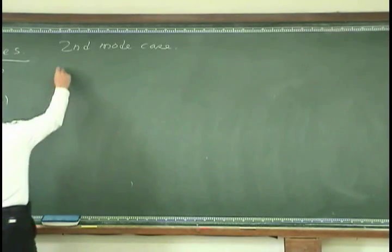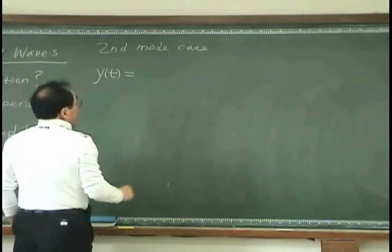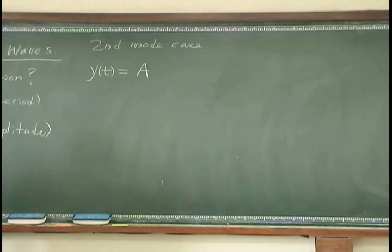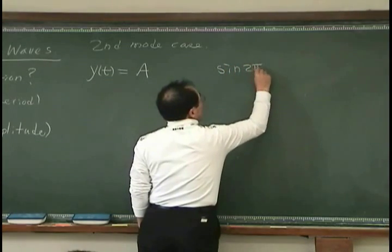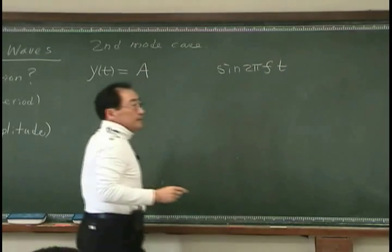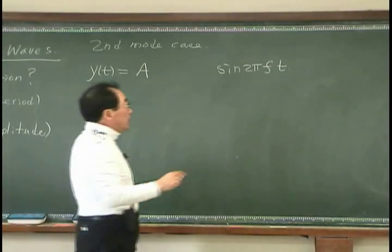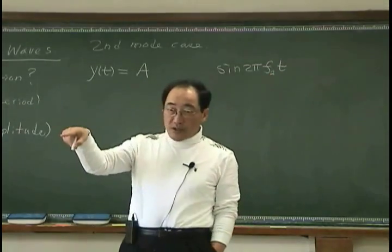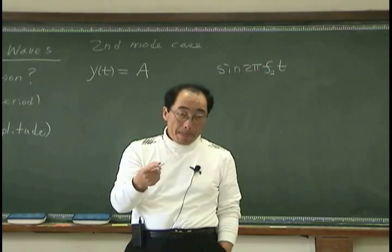And I can write the vibration of second mode as amplitude, and one is oscillating with respect to time. And I write sine 2πf₂t. And because that is a second mode, I use subscript 2 rather than using 1 as I used in the text. So I want to change it.